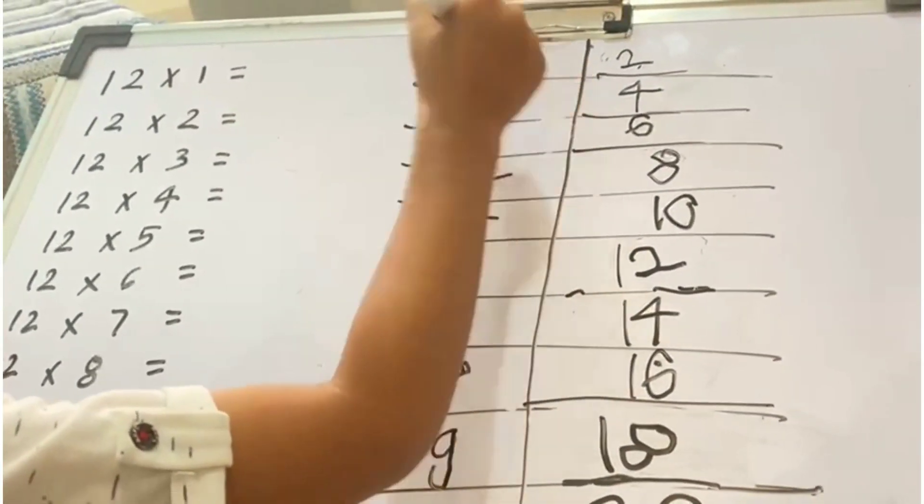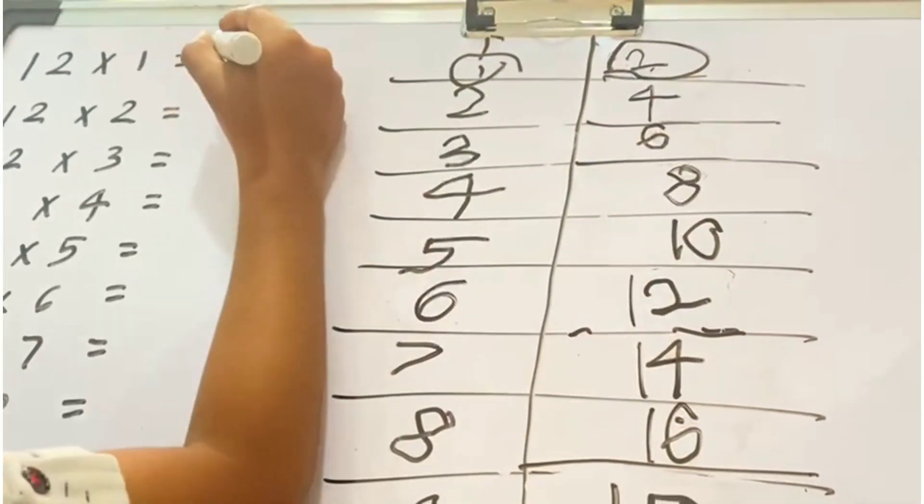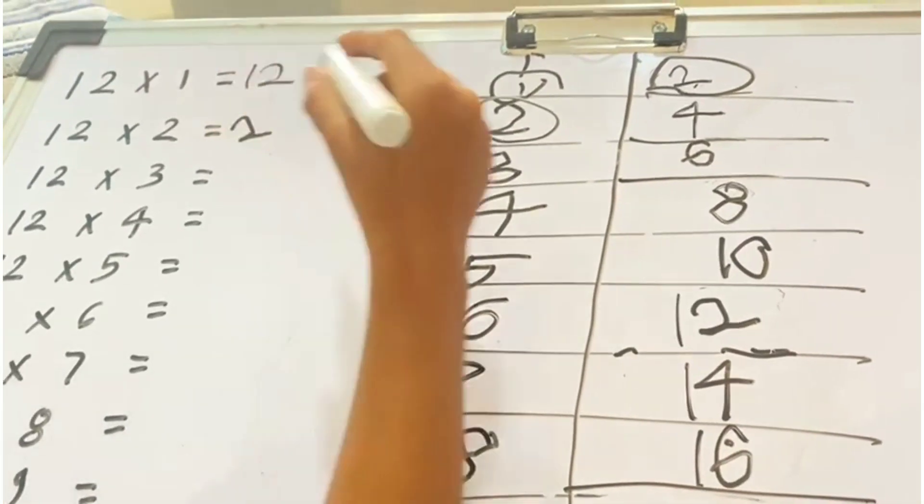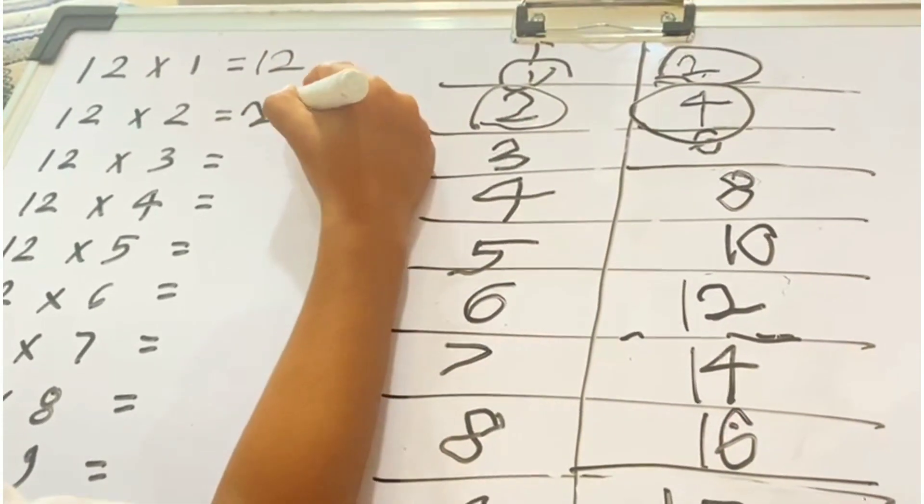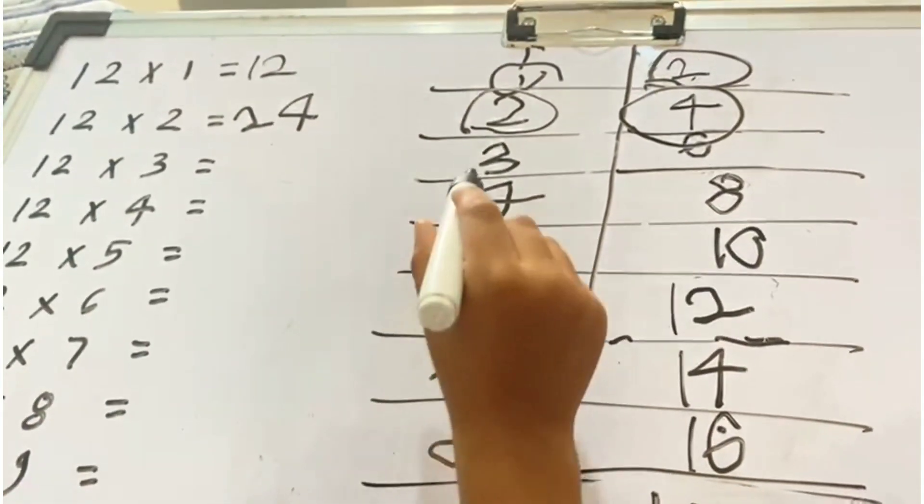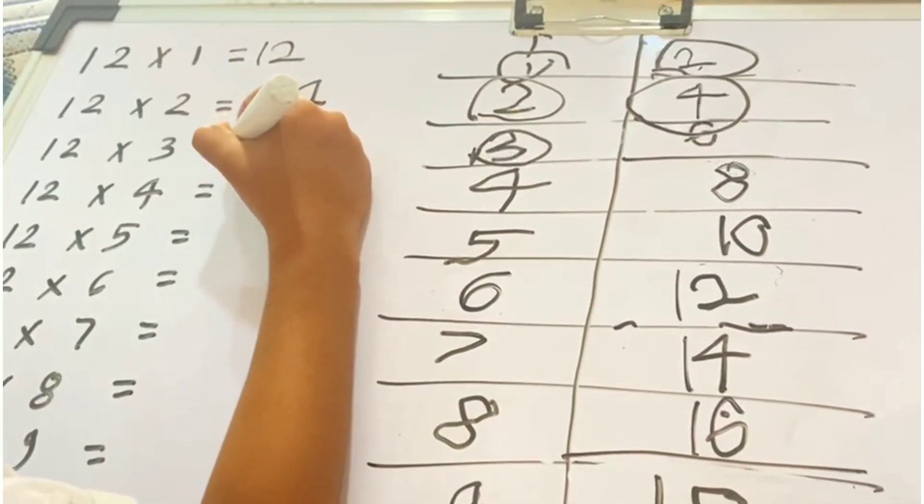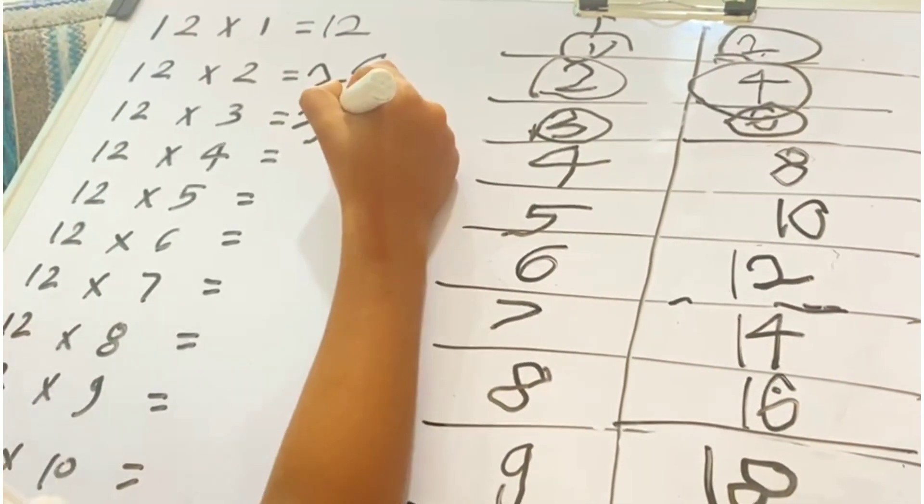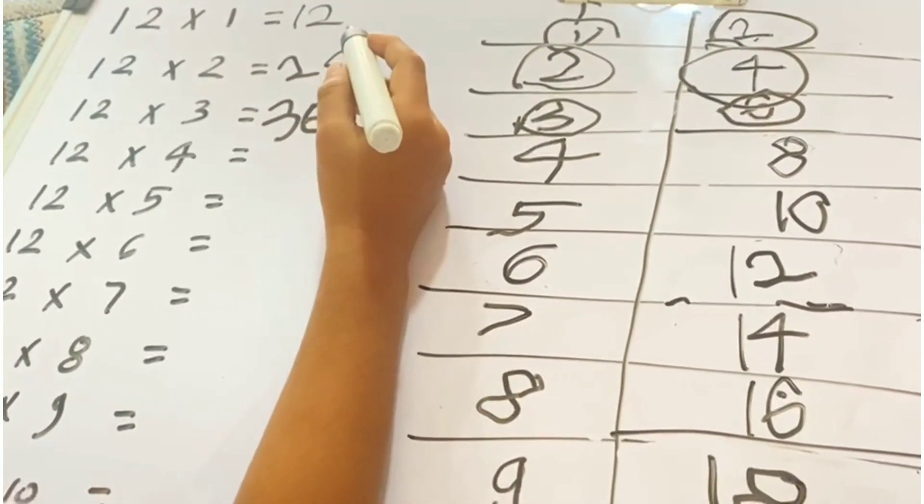This 1 right here, this 2 right here. 12 ones are 12. This 2 right here, this 4 right here. 12 twos are 24. This 3 right here, this 6 right here. 12 threes are 36.